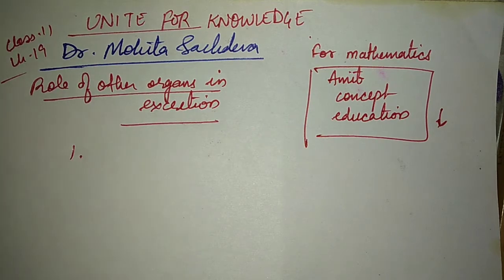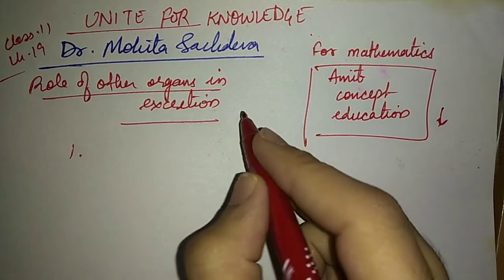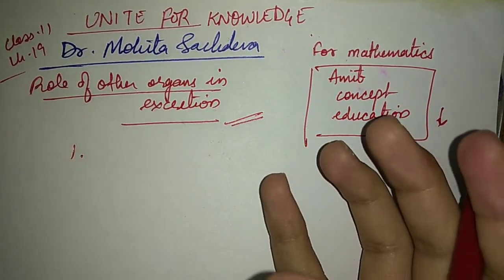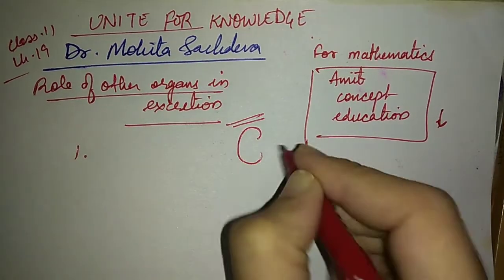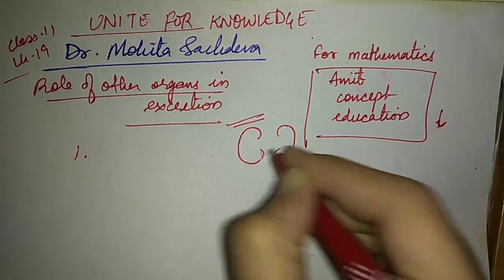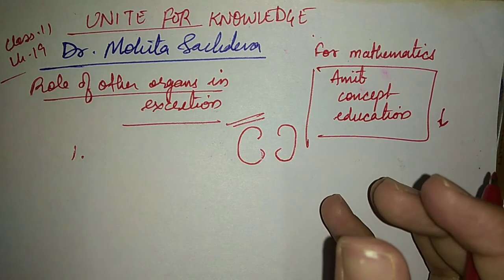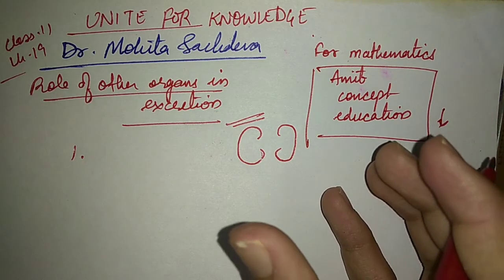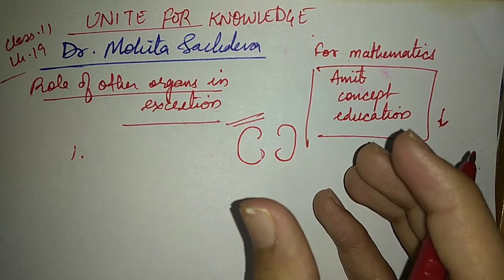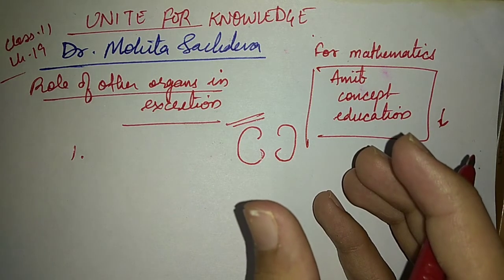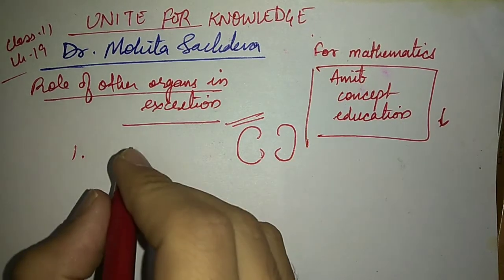So I'll start with the role of other organs in excretion. We have studied the kidney, but there are many other organs which are helping in excretion, the removal of waste that we don't need from the body.